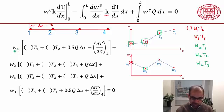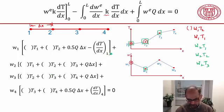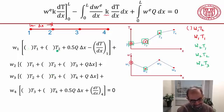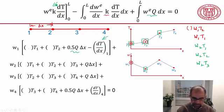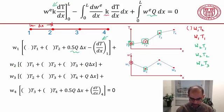Looking at the first row: if you take all the terms multiplying w1 and organize them, w1 will multiply t1 with some constant coefficient, and it will multiply t2 — so you get a term involving w1 from here, and that term comes from there. Similarly for w2: you will get terms where it's multiplying t1, t2, and t3, as we discussed.